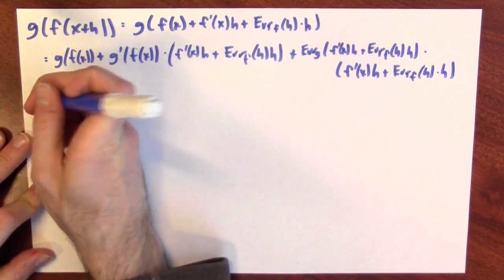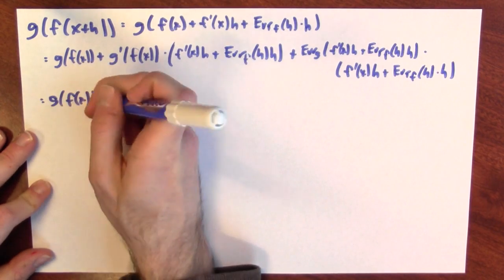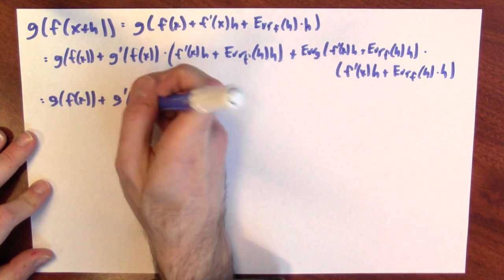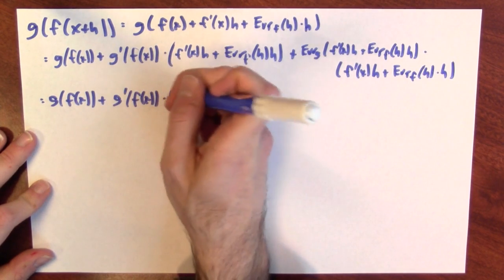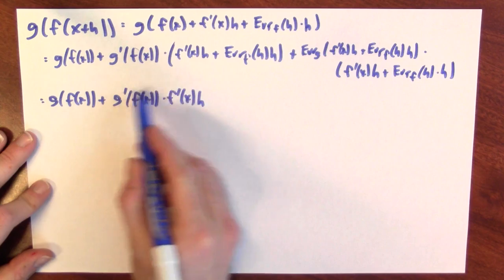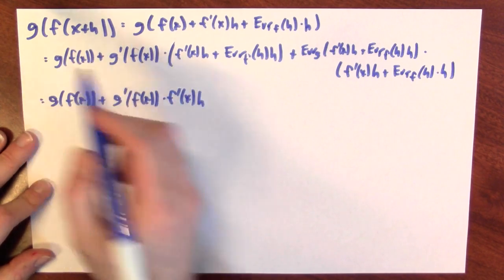Now I can expand it out a bit. So this is g of f of x plus, can multiply these two terms together, g prime of f of x times f prime of x h. That's looking really good because that's what the chain rule is, right? It's supposed to give me this as the derivative of g composed of f.